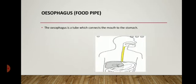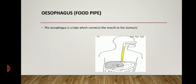The esophagus, commonly known as the food pipe, connects the mouth or buccal cavity to the stomach. It runs along the neck and chest. The esophagus carries the slightly digested food from the mouth to the stomach through a wave-like movement known as peristalsis.